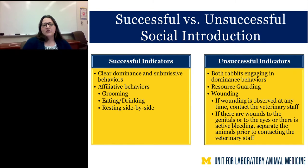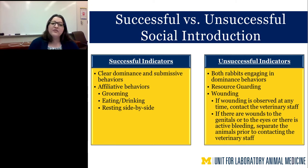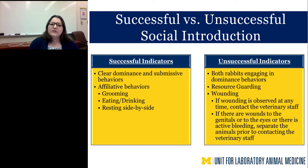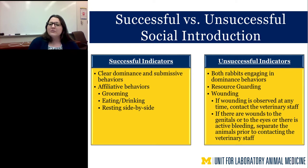There are many signs of a successful versus unsuccessful social introduction. Successful indicators include clear dominant and submissive behaviors and affiliative behaviors like grooming, eating or drinking together, and resting side by side. Unsuccessful signs include both rabbits engaging in dominance behaviors — indicating two dominant rabbits — resource guarding, or wounding. If wounding is observed at any time, contact the veterinary staff immediately. Do not separate unless wounds are to the genitals or eyes, or there's active bleeding or a deep lesion that might need a suture.